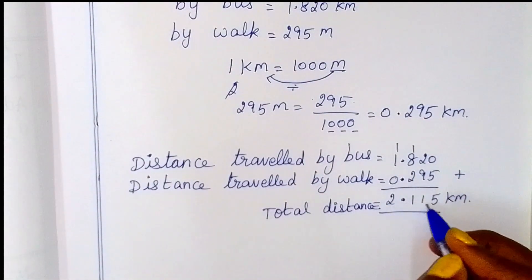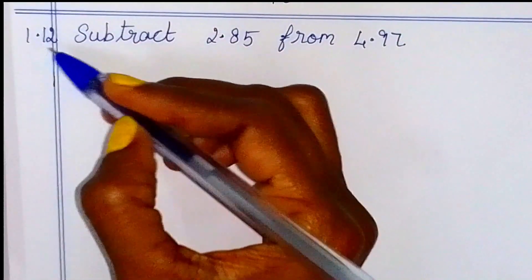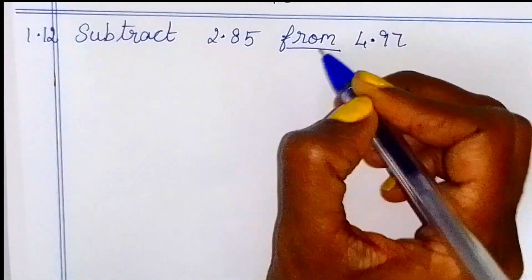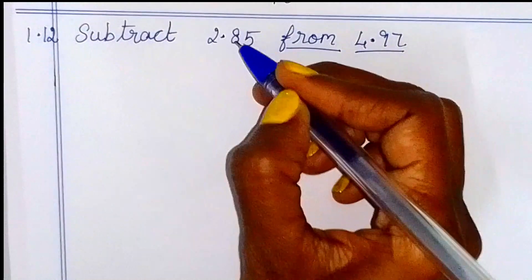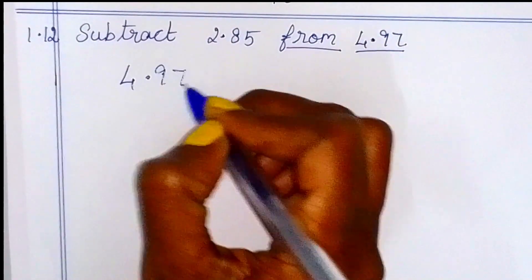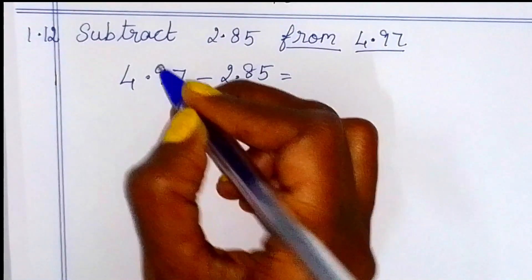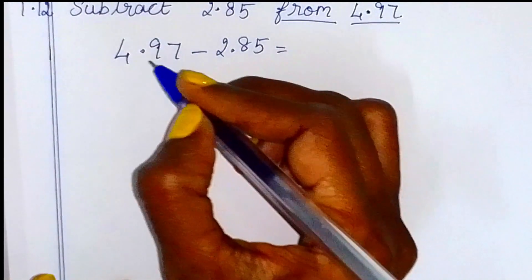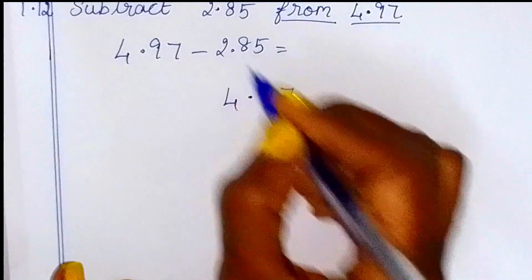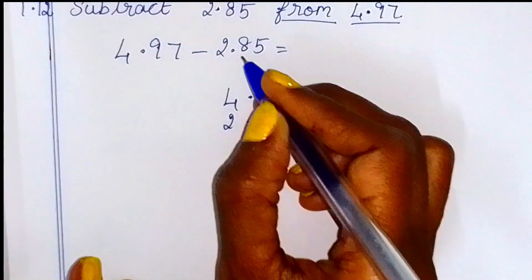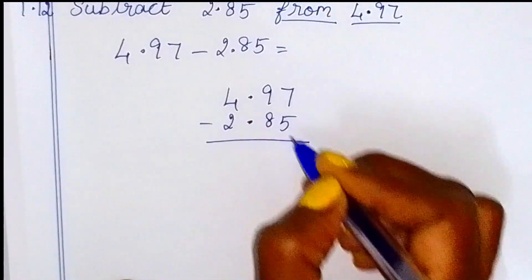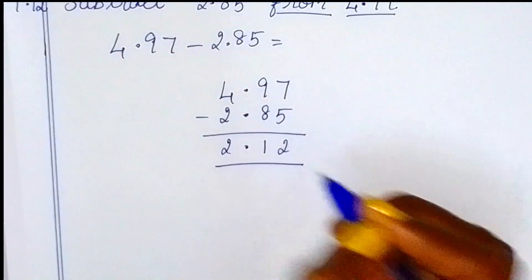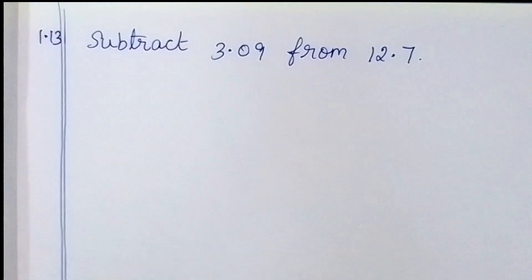So total distance to school from her house — total distance is equal to 2.115 kilometers. Now we will see example 1.12: subtract 2.85 from 4.97. Decimal point is straight, place whole number. So 4.97 minus 2.85 equals 2.12. This is the answer.